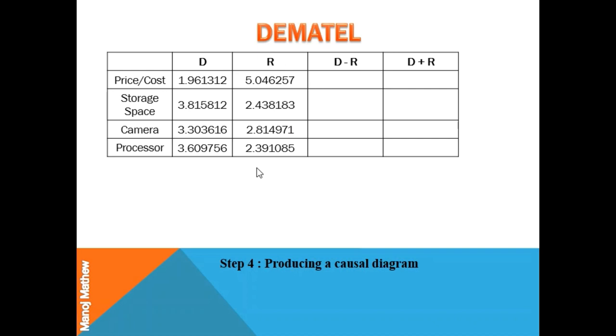Next, we calculate D plus R and D minus R. D plus R reveals how much importance the criteria has. D plus R indicates the degree of relation between each criteria with other criteria. The criteria having higher value of D plus R have more relationship with another criteria, and those having smaller value of D plus R have less relationship with other criteria. You can see that cost has the highest D plus R value which indicates that cost is the most important criteria among all others because it has the maximum relationship with other criteria.